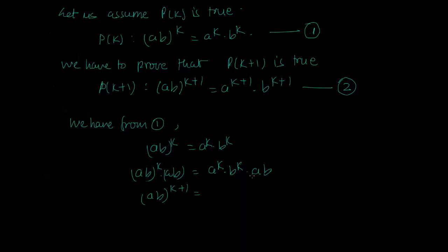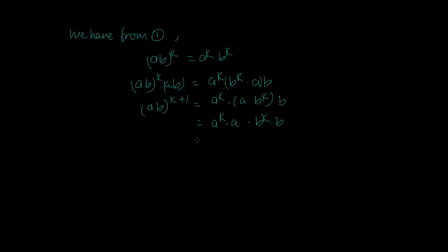Since multiplication is commutative and associative, I rearrange the right side: a^k · b^k · a · b. I group the a terms together and the b terms together using associativity and commutativity, giving a^k · a · b^k · b, which equals a^(k+1) · b^(k+1).